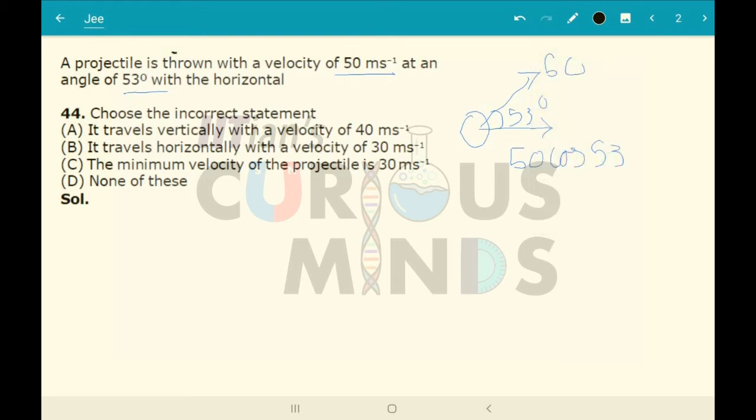The velocity in horizontal remains constant, so vh will be equal to 50 cos 53. Now let us find out the value of cos 53.